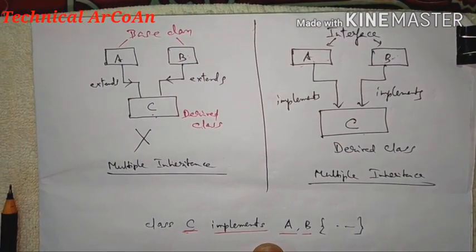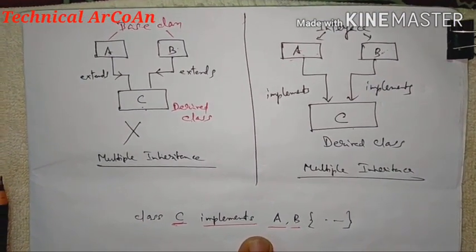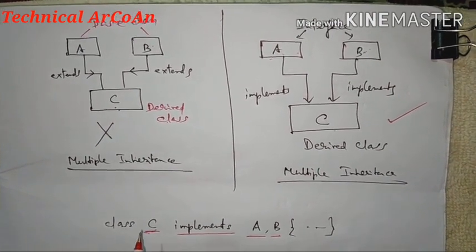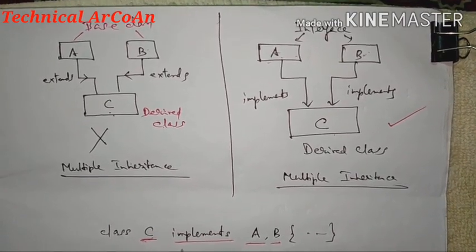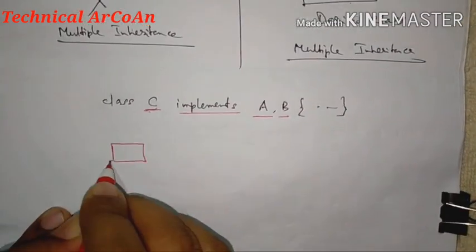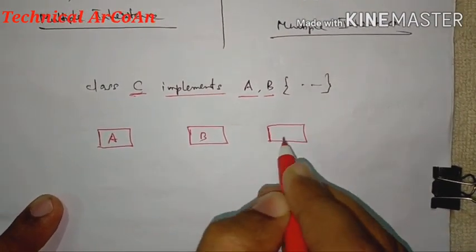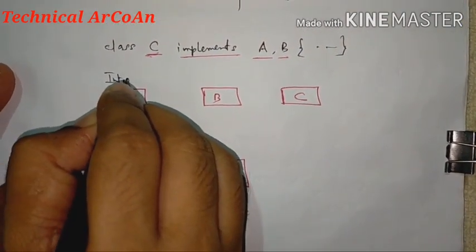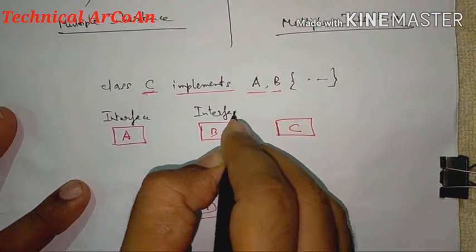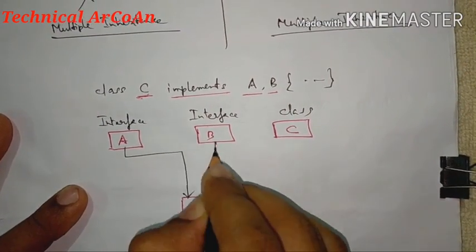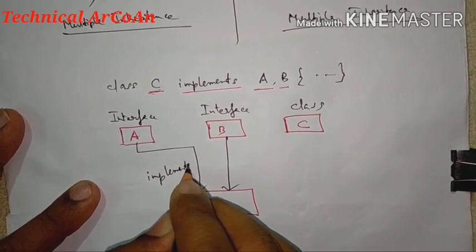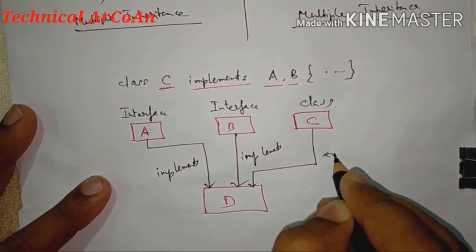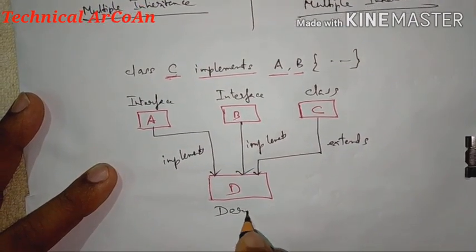Some important points to remember when using interfaces. Point one: a class can implement more than one interface. Point two: a class can extend only one class but can implement many interfaces. For example, if A and B are interfaces and C is a class, then a derived class D can implement A and B and extend C — this is valid in Java.